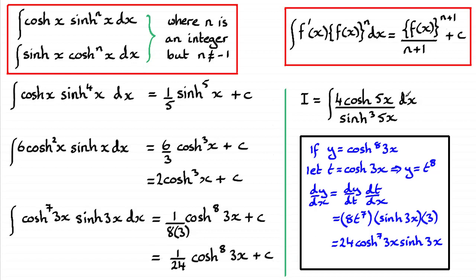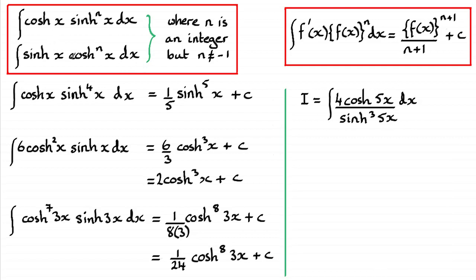The last one looks different at first, but we can bring sinh³(5x) up to the numerator as a negative power. Rewriting: ∫4·cosh(5x)·sinh⁻³(5x)dx. Now f(x) = sinh(5x), n = −3. Differentiating sinh(5x) gives 5cosh(5x), so ignoring the constant 5 we have that differential at the front. Using the formula, adding 1 to the power gives sinh(5x) to the power −2.